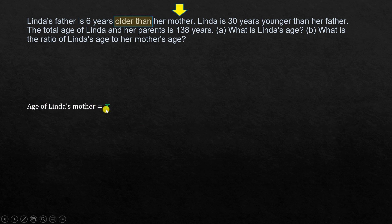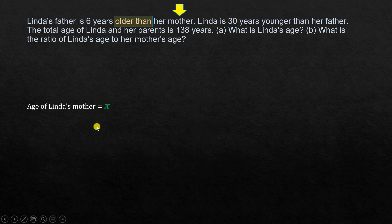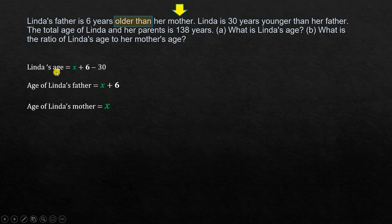Let's assume the age of Linda's mother is x. In algebra, we represent unknown quantities with letters — it can be x, y, a, b, or anything; it just means we don't know the value. Linda's father is six years older, so his age is x plus 6. Linda is 30 years younger than her father, so Linda's age is x plus 6 minus 30.